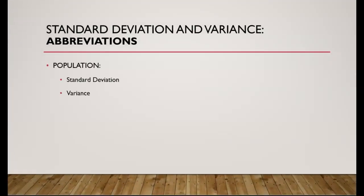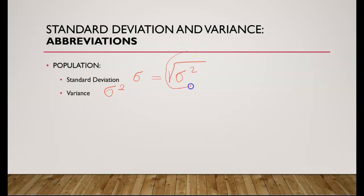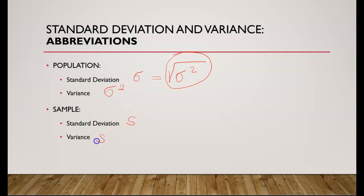Let's go over some abbreviations. Population standard deviation is abbreviated as sigma. Variance is abbreviated as sigma-squared. Standard deviation is the square root of the variance. Sample standard deviation is abbreviated as s and sample variance is abbreviated as s-squared. So the standard deviation of the sample is equal to the square root of the sample variance.